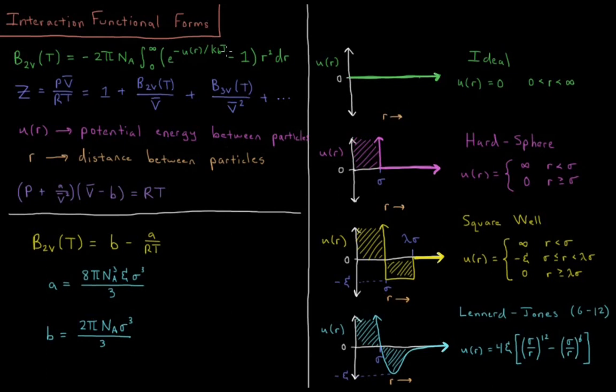You can also derive the van der Waals parameters a and b from the Lennard-Jones potential by substituting into the virial coefficient expression. The parameter a depends on both sigma and epsilon — how particles attract depends on both size and strength of attraction — whereas b equals 2π times Avogadro's number over 3 times sigma cubed, giving the effective molecular volume in units of meters cubed per mole.